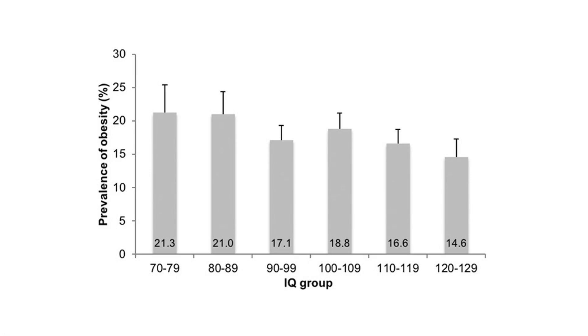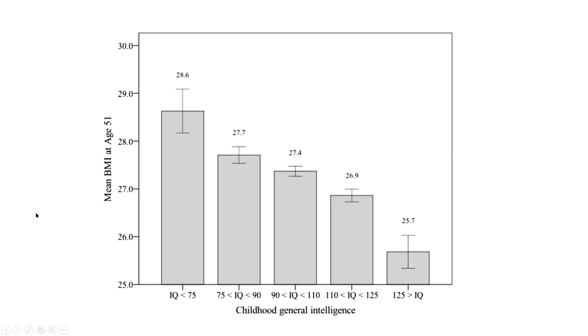Here's the prevalence of obesity and IQ group. People with lower IQs are more obese. People with higher IQs have less prevalence of obesity on average. This is the mean BMI at age 51 years old. IQs, childhood general intelligence. Smarter people are less obese and have lower body mass index at age 51. You can see it right here.